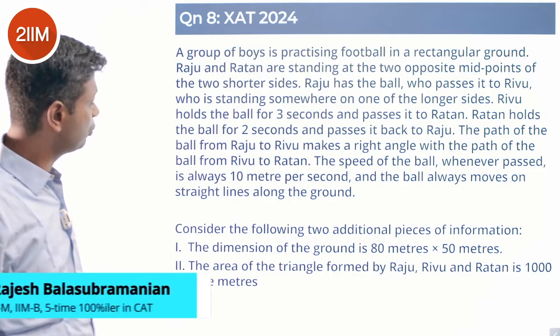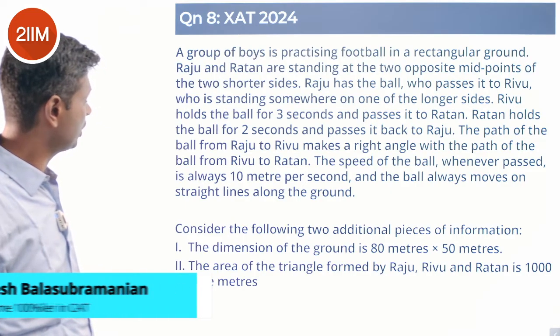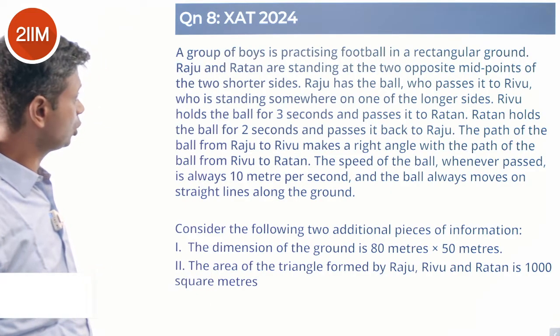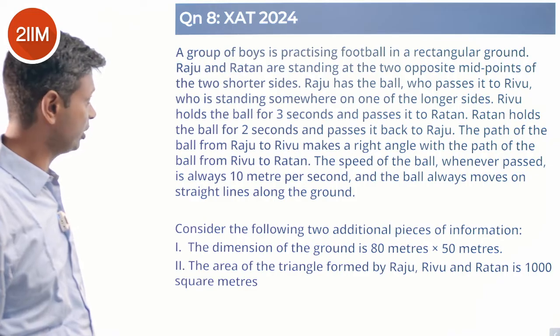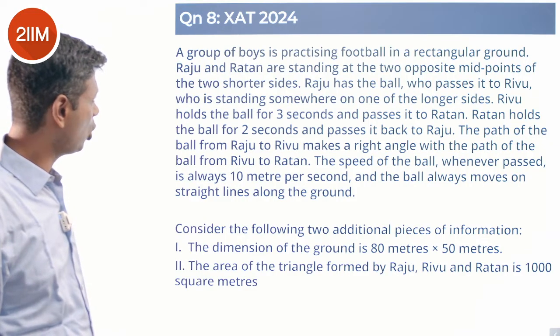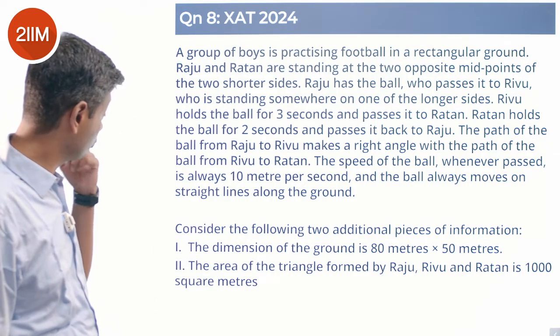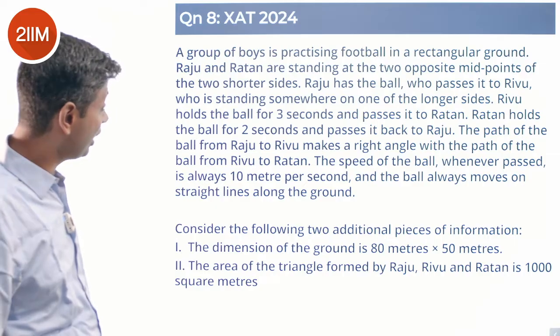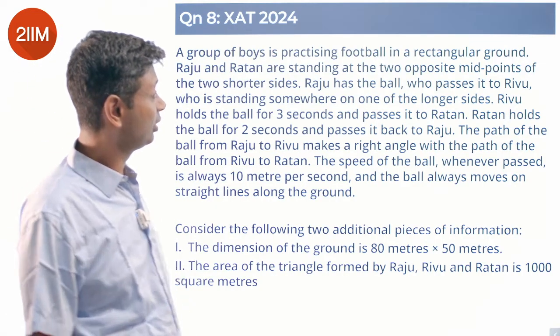A group of boys is practicing football in a rectangular ground. Raju and Ratan are standing at the two opposite midpoints of the two shorter sides. Raju has the ball and passes it to Rivu, who is standing somewhere on one of the longer sides.